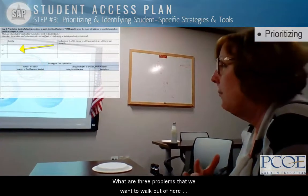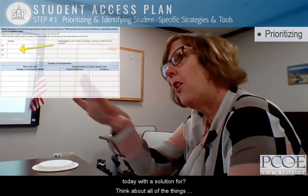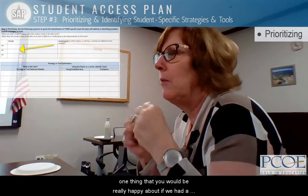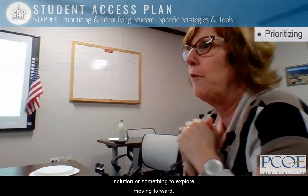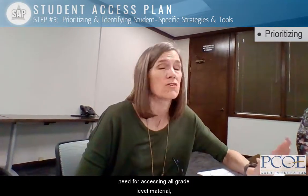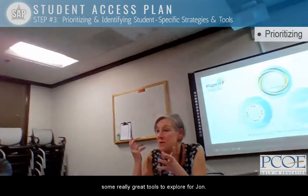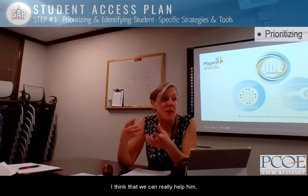What are three problems that we want to walk out of here today with a solution for? Think about all the things we've been talking about, and if you could just come up with one thing that you would be really happy about if we had a solution, or something to explore moving forward. I think it's pretty obvious — we've spent a great deal of our time talking about his need for access to all grade level material. And I think there's some really great tools to explore for John. I think that we can really help him, especially with the spelling challenges.